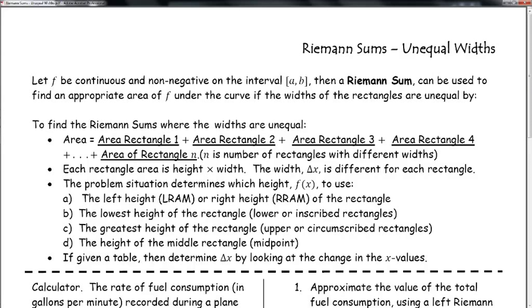The lowest height is the inscribed. That's going to be below the function. The greatest height of the rectangle, that's going to be a circumscribed rectangle. That will be above, that will be an over-approximation, above the curve.